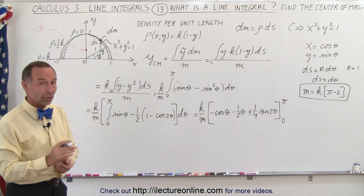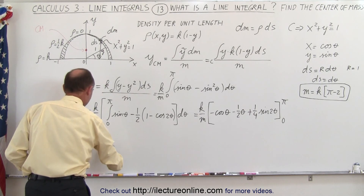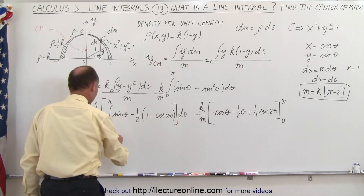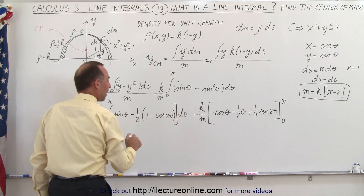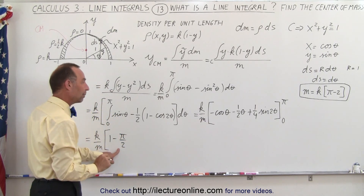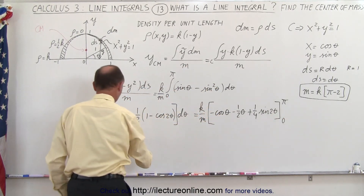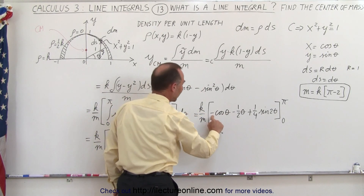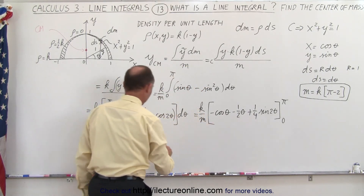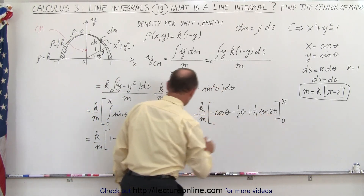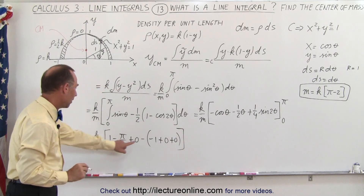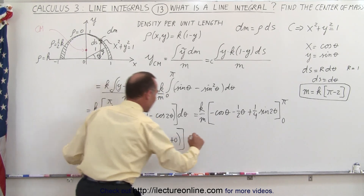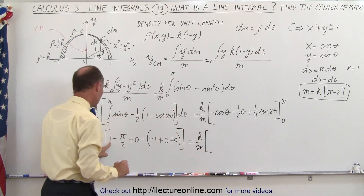Plugging in the limits: at the upper limit (pi), cosine π = −1 times a negative gives +1; minus π/2; sine 2π = 0 so plus 0. At the lower limit (0), negative cosine 0 = −1; plus 0; plus 0. So we get: minus times minus is plus, 1 + 1 = 2, minus π/2. This becomes k over m times (2 minus π/2).